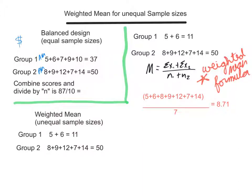If I have equal sample sizes (n equals 5 for both groups), I can add these all up to get 37 and divide by 5 to get 7.4 for Group 1, and 50 divided by 5 equals 10 for Group 2. I can combine these scores and divide by 10 (5 plus 5), which gives me an average of 8.7 for the two classes when I have equal sample sizes.